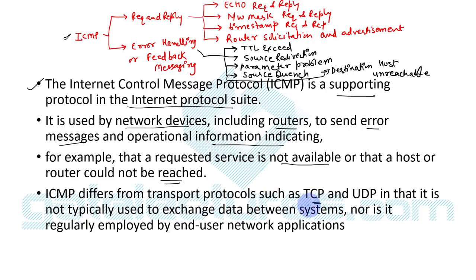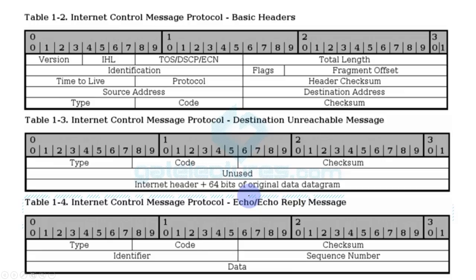ICMP differs from transport protocols such as TCP or UDP in that it is not typically used to exchange data between systems, nor is it regularly employed by end-user network applications. ICMP has a different header format, as we can see here.